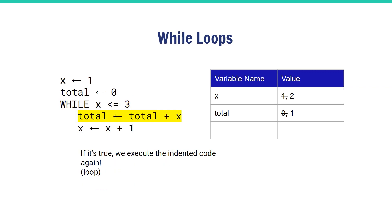It is still true, so we go back and re-execute the lines of indented code. Total gets updated to three and x gets updated to also three. We reach the end of the indented lines of code again.